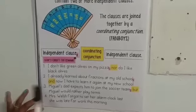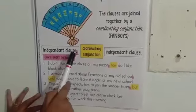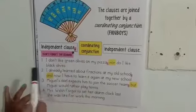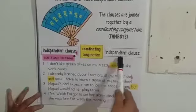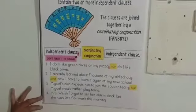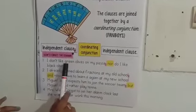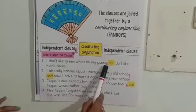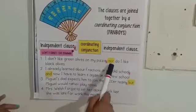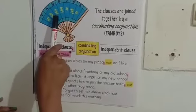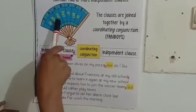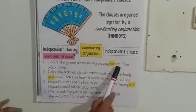How to create a compound sentence? Independent clauses — first, start with an independent clause, put a comma, then the coordinating conjunction, then one more independent clause. Let's see the first example: 'I don't like green olives on my pizza, nor do I like black olives.' Here, 'nor' is the coordinating conjunction used in the middle.